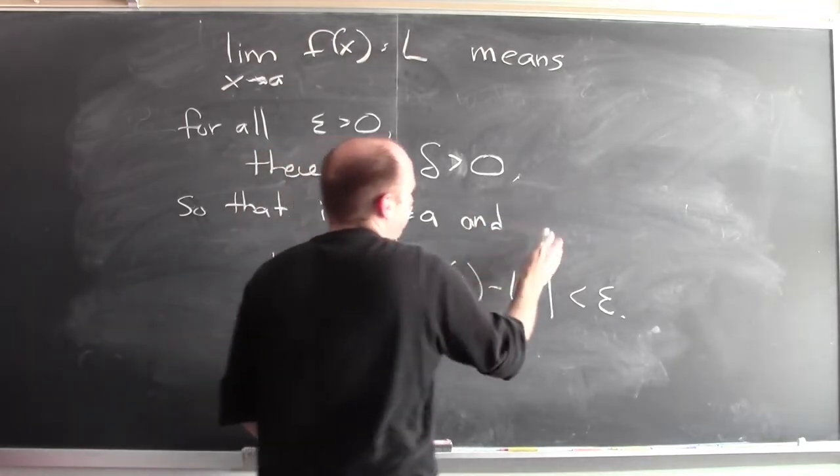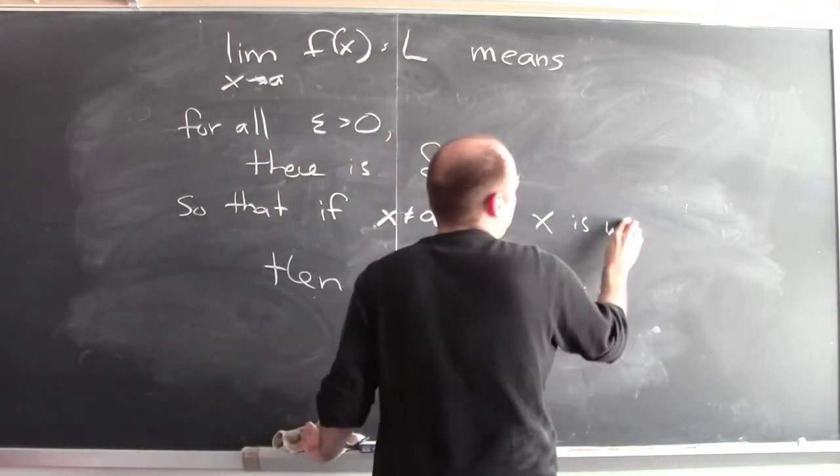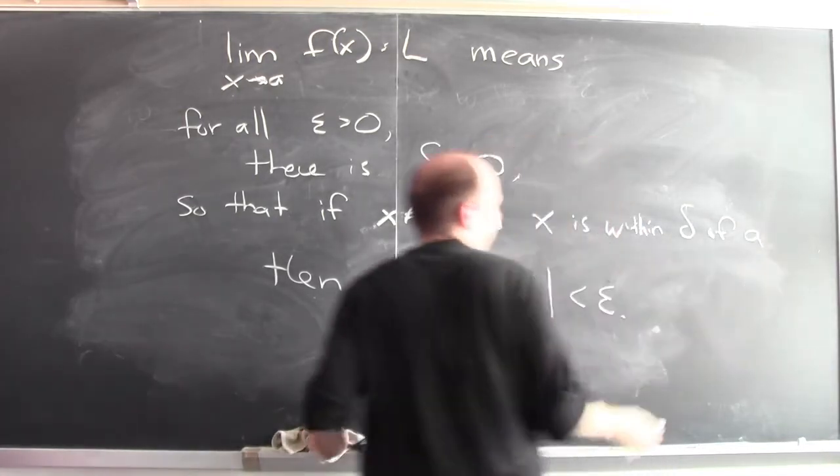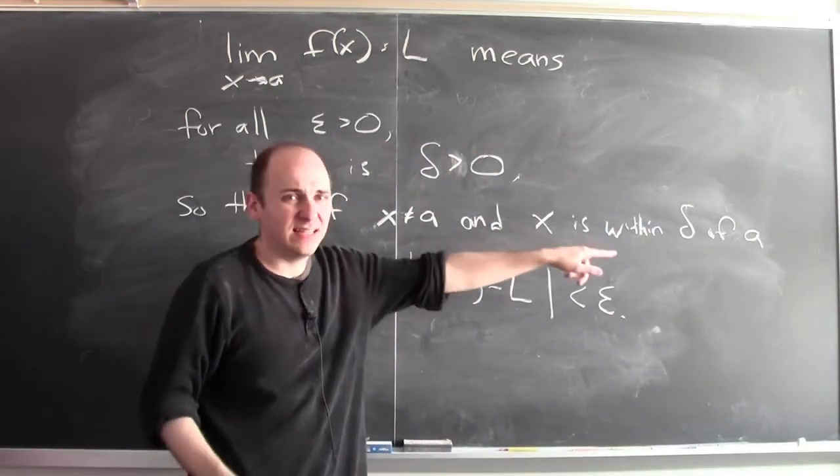and x is within delta of a. So the distance between x and a is delta.